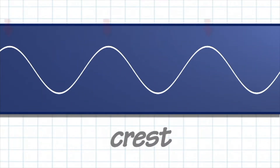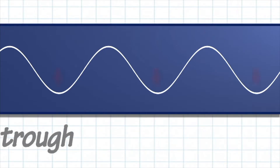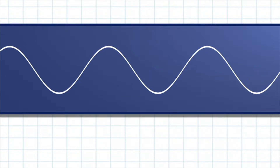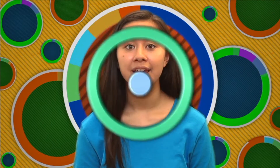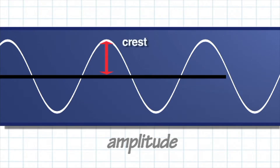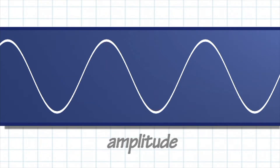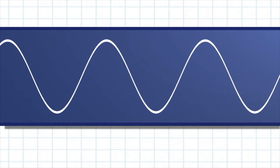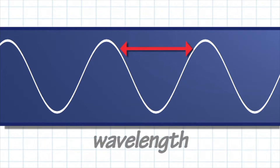Let's examine some properties of light waves by looking at a graphic of a wave. Waves go up and down with high points called crests and low points called troughs. The first property we are going to discuss is amplitude. We can measure amplitude by measuring the height of a wave — the distance between the center of the wave and the crest or the trough. Another property of a light wave is wavelength, which is determined by measuring the distance between two high points or two low points on a wave.